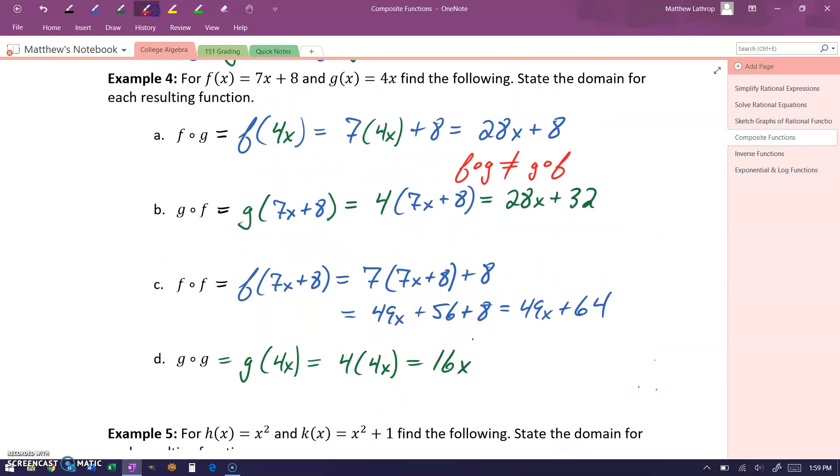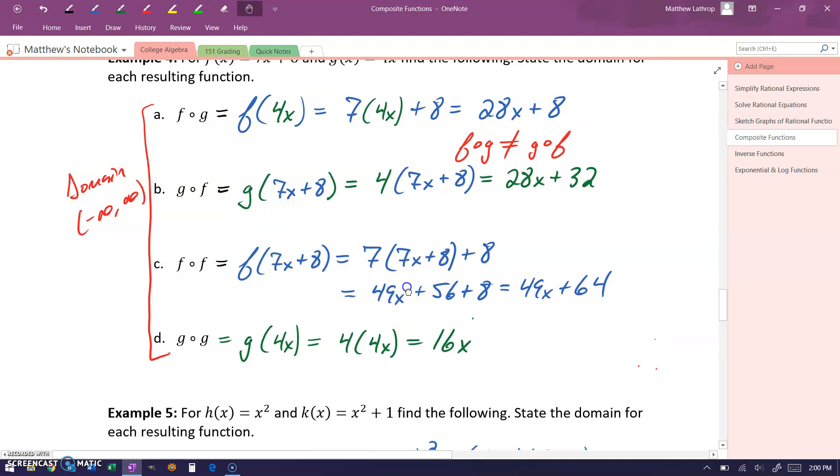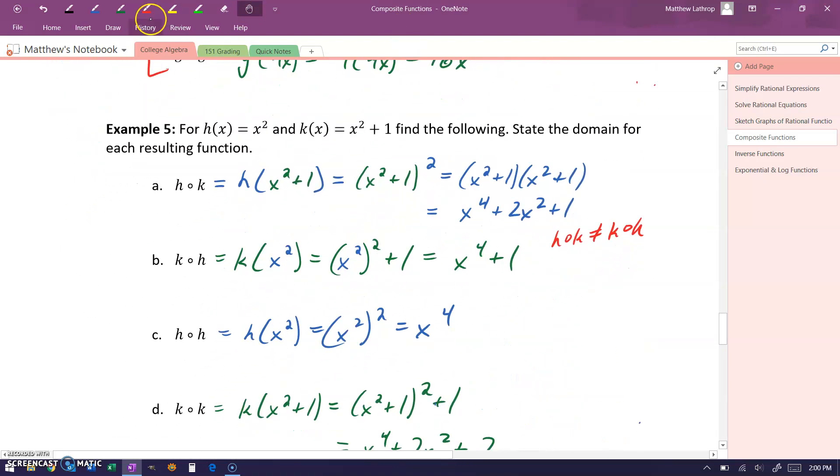In each of these examples, we haven't made a point of stating this as we went along, but in example four, a through d, our domain is negative infinity to infinity or all real numbers. And all of our examples or all of our problems in example five will have that same domain of negative infinity to infinity.